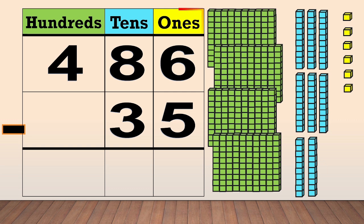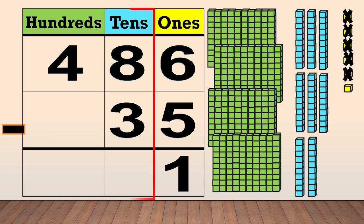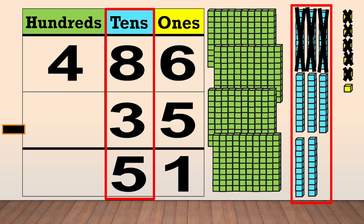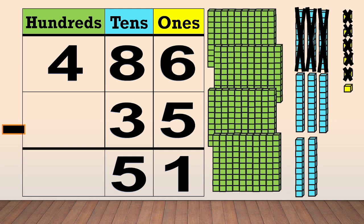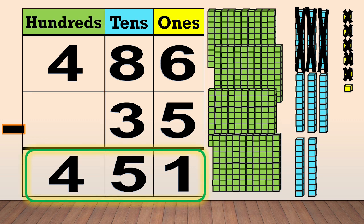Next, we subtract the ones. Six ones minus five ones equals one. Then, we subtract the tens. Eight tens minus three tens equals five. Now, we subtract the hundreds. We have four hundreds, but there is no number in the hundreds column. That means there is nothing to subtract, so we bring down the four hundreds. So, 486 minus 35 equals 451.